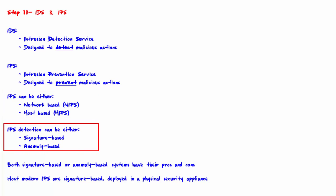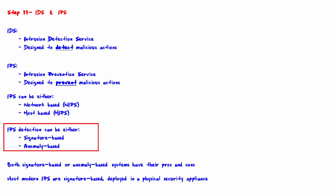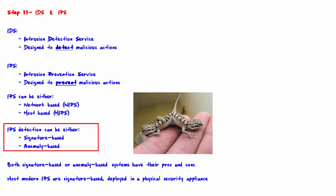IPS detection can be signature-based or anomaly-based. With signature-based detection, there will be one signature for every exploit it is capable of preventing. The signature works by zeroing in on some unique aspect of the particular exploit that is always present. With anomaly-based detection, the system looks for signs of abnormal traffic and assumes that the abnormal traffic is malicious.